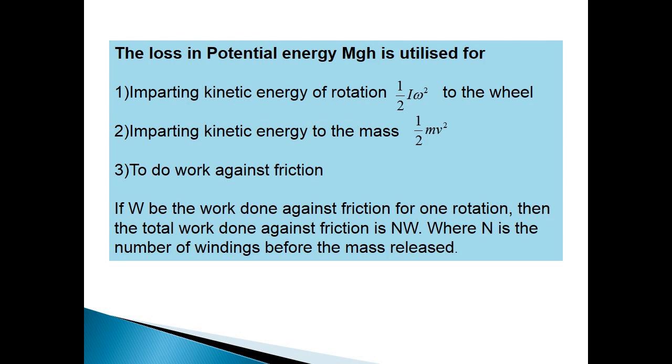The loss in potential energy Mgh is utilized for: 1. Imparting kinetic energy of rotation, half I omega square to the wheel. 2. Imparting kinetic energy to the mass, half mv square. And 3. To do work against friction.